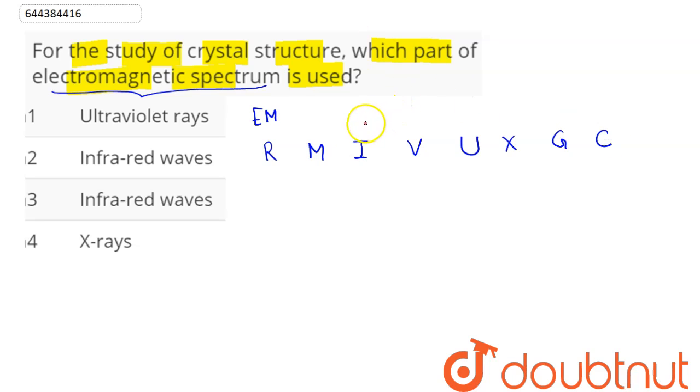Going from left to right, we can see here that energy increases or we can say frequency also increases. Whereas from right to left, wavelength increases. Here from left to right, wavelength decreases.